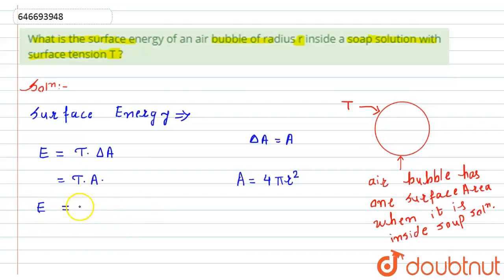So here we can write the surface energy for this air bubble will become E equals T into 4πr squared, that means 4Tπr squared. And this will be the required answer. So this is the required solution for this particular equation.